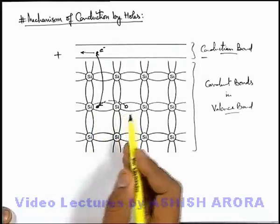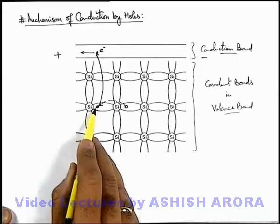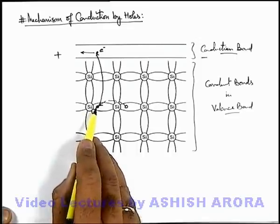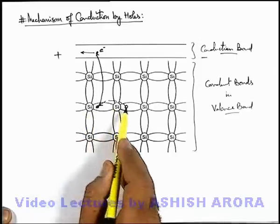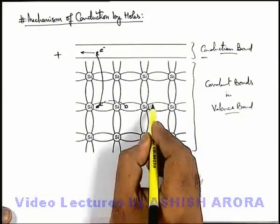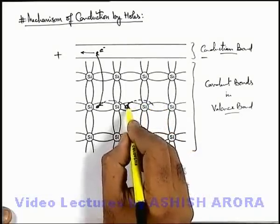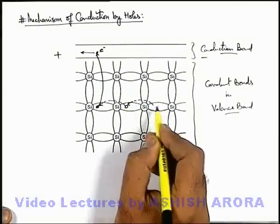So we can say an electron from the neighboring covalent bond is shifted to this covalent bond, and correspondingly the hole is shifted from this point to this point. Similarly, another electron will shift from another covalent bond ahead.